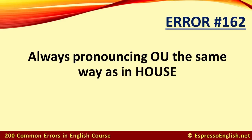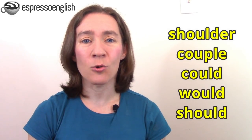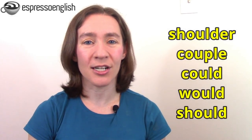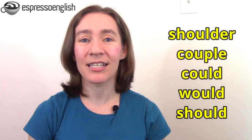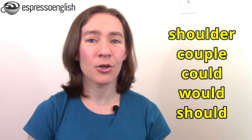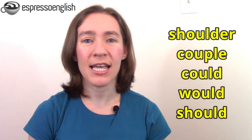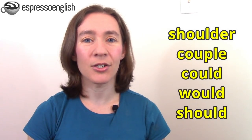Error number 162. Another very common letter combination that can be pronounced several different ways is OU. We have OO as in house — this is probably the most common. But it can also be pronounced O as in shoulder, and UH as in couple. And in the words could, would, and should, it's pronounced more like UH.